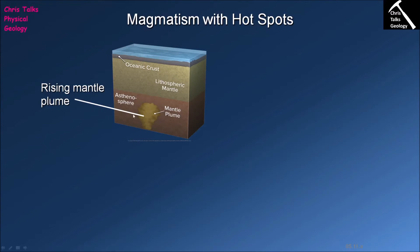As our mantle plume begins to head towards the lithosphere, the pressure is obviously going to be decreasing. So what we have is a blob of extremely hot mantle rocks with a steadily decreasing pressure, and this is going to lead to decompressional melting of our mantle plume. As it rises it's going to start to melt and produce magma, and we know the magma produced is going to be of a mafic composition because we're melting mantle rocks.